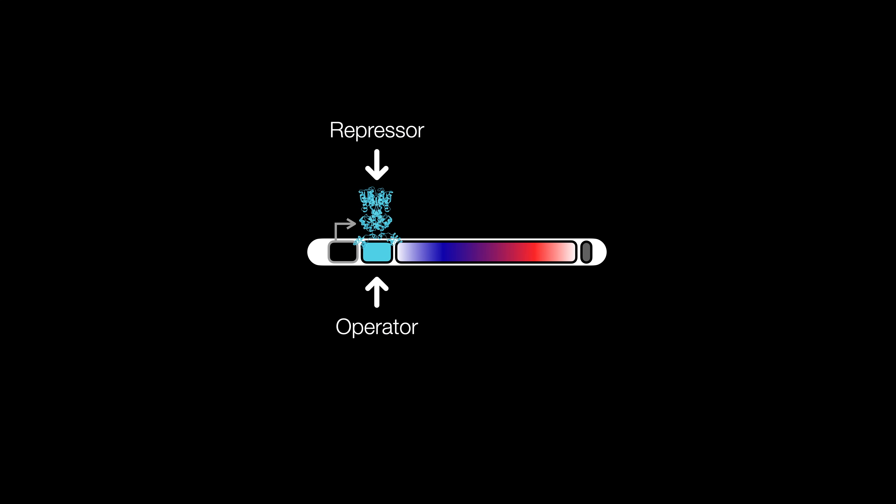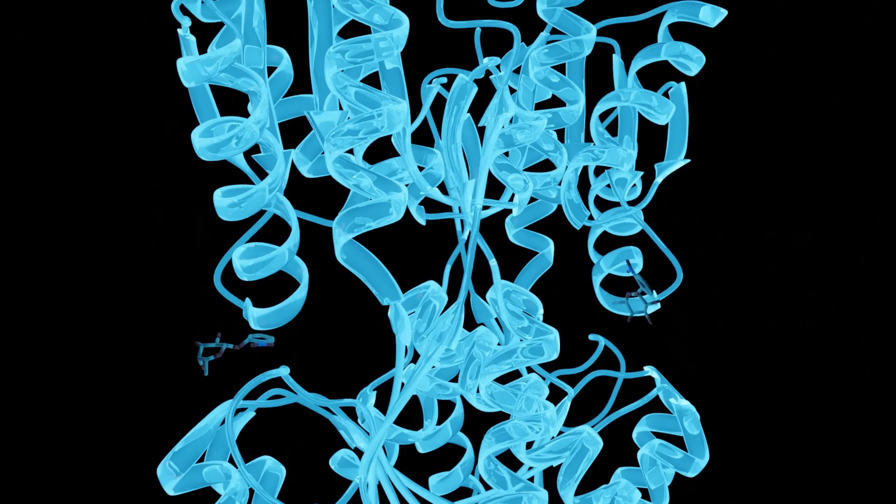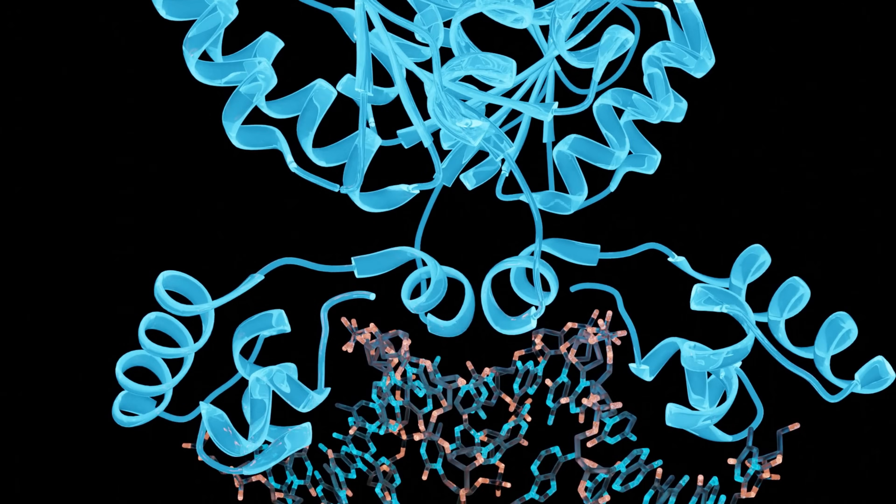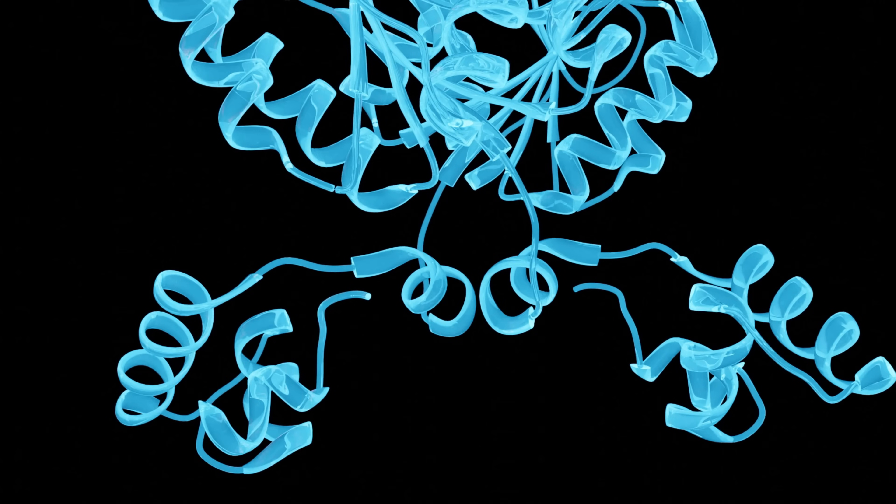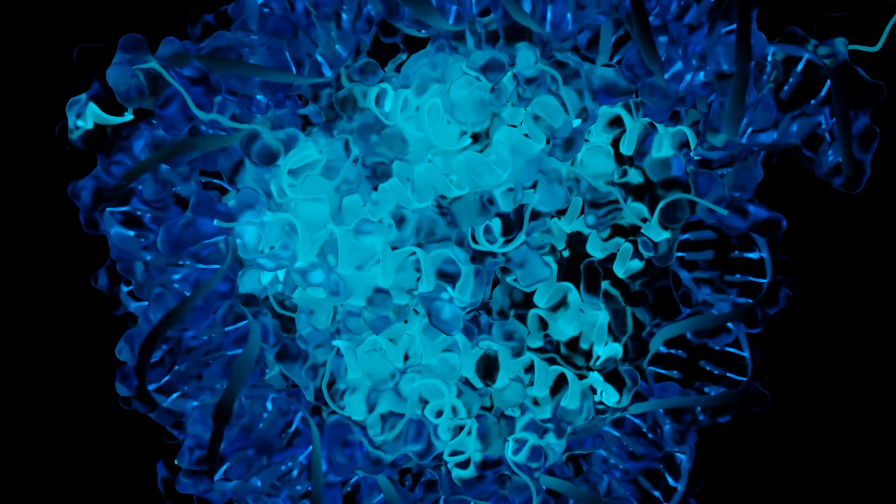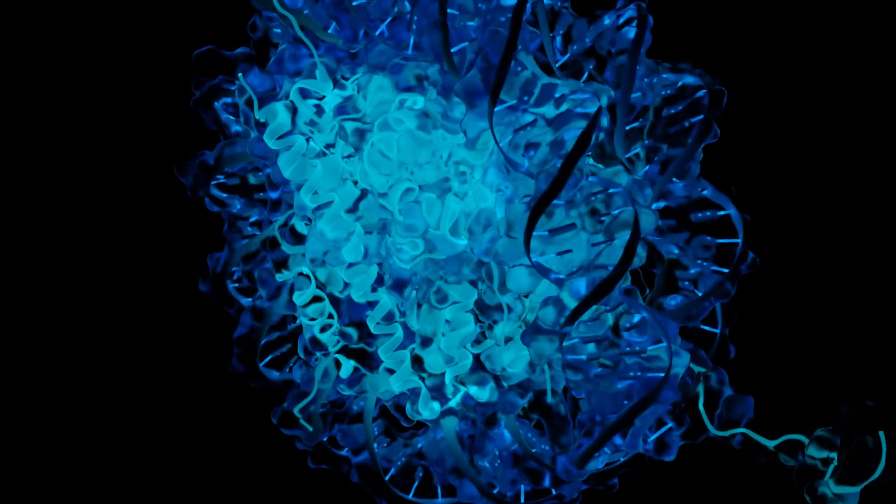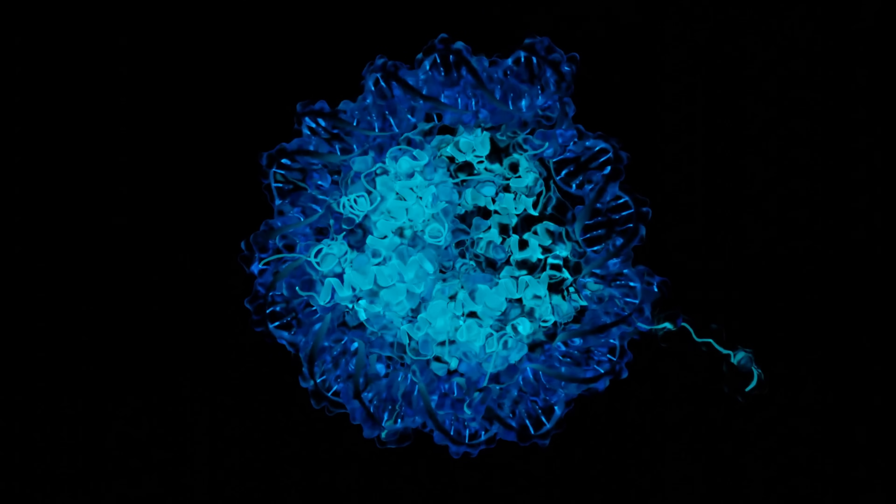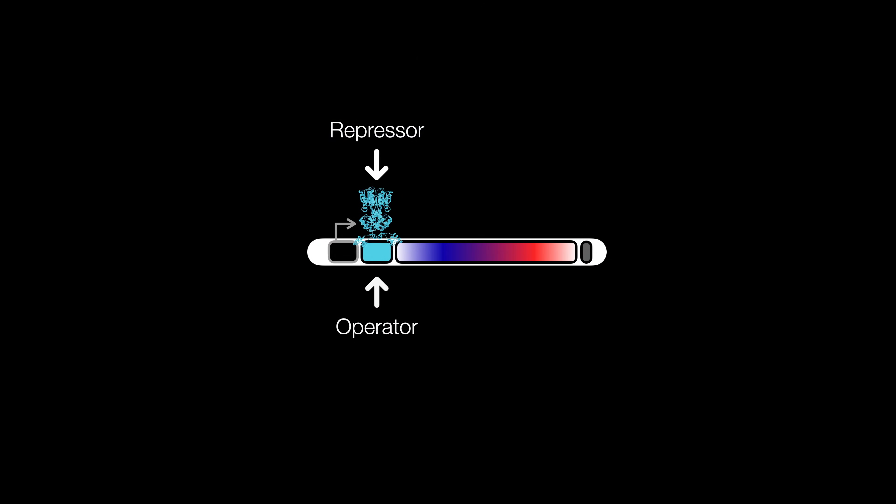But when a signal, in this case lactose, binds to the repressor, it lets go of the DNA. This is basically a switch. Another cool example of controlling transcription is the building material of our chromosomes. It physically blocks RNA polymerase by having DNA wrapped tightly around it. Instead of just lowering transcription rates, you can also increase the transcription rates using molecules called activators that allow RNA polymerase to anchor on more stably.